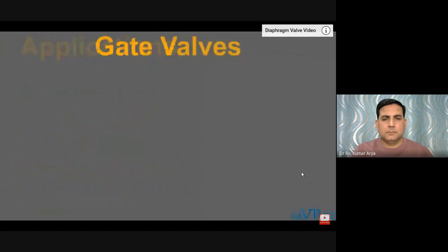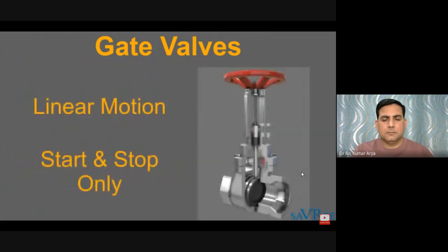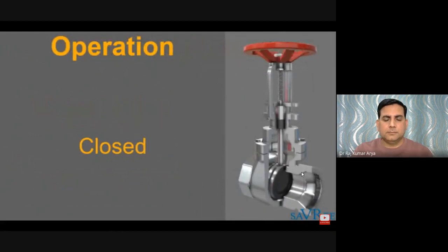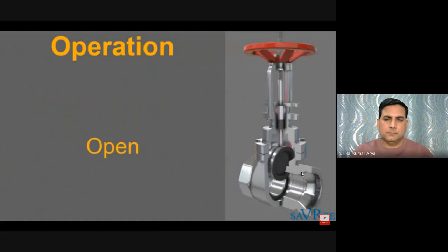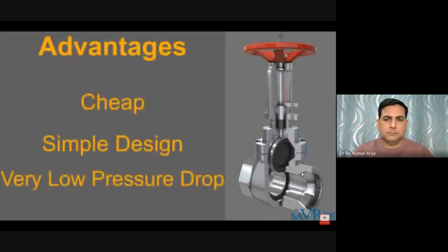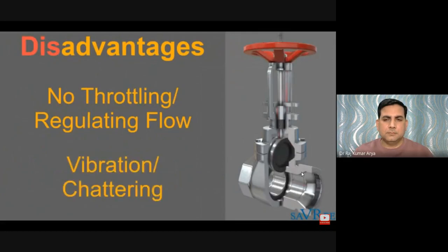Gate valves are the most common type of valve used today. They are linear motion valves used to start or stop flow, but are not suitable for regulating flow. The disc is completely removed from the flow stream when fully open, allowing flow with virtually no resistance and a very low pressure drop. The main advantages are low cost and very low pressure drop when fully open. Disadvantages include unsuitability for throttling, excessive vibration when partially open, and greater susceptibility to seat and disc wear compared to a globe valve.